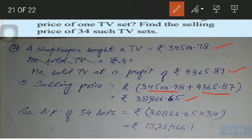Now we have to calculate the selling price of 34 TV sets. Simply multiply the selling price of one set by 34, and the answer comes out to be rupees 13,21,466.10. So this was all for today. Thank you, have a nice day.